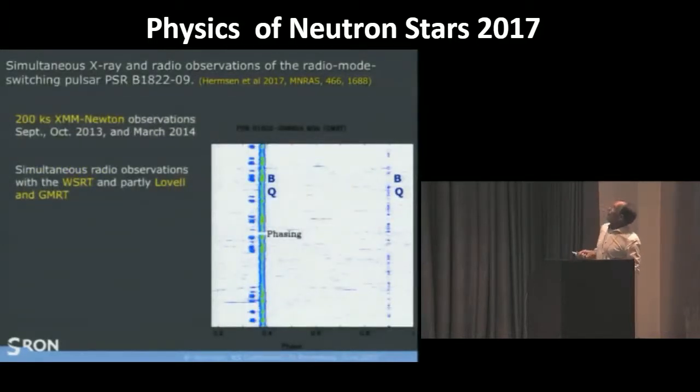So then the campaign on 1822. We had 200 kiloseconds of XMM-Newton observations in 2013 and March 2014. We had simultaneous observations with Westerbork. And it was also supported by Lovell and GMRT. Because particularly in this case, when you mode every five minutes, you always have to know exactly in what radio mode it is. So you must really have always coverage. If one of those radio telescopes would have RFI or wouldn't work for a moment, we could have the other.